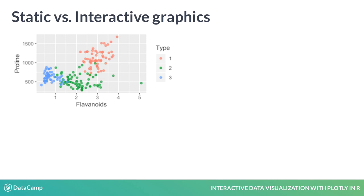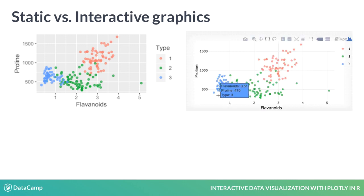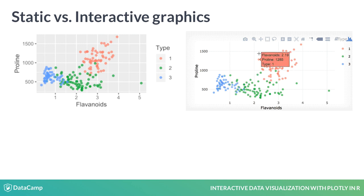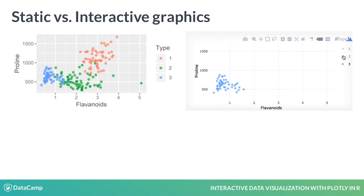A static plot, such as one rendered in ggplot2, remains permanently fixed. This format is useful for printed materials such as reports, but can only display what you, the creator, have highlighted. On the other hand, the user can update an interactive graphic. For example, you can drill down to specific observations using hover info, or focus on subsets of your data by selecting or deselecting groups.